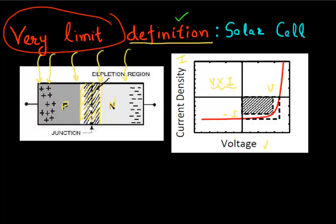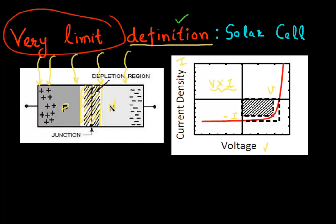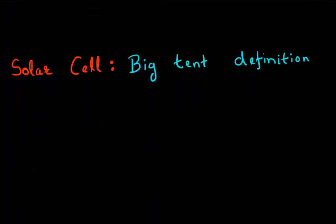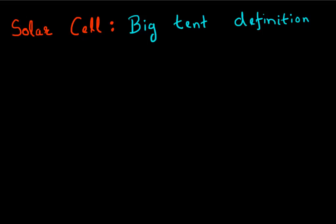And in fact, a lot of solar cells that you'll see being researched on or in the market, they don't look anything like this PN junction. So what I want to do is dispel this very small definition from your mind and give you what I call as my big tent definition of solar cell. And if you use this definition, you could essentially understand any solar cell available in the market and what other solar cells which are being researched in universities as well. And it's a very simple definition as well because we like simplicity.